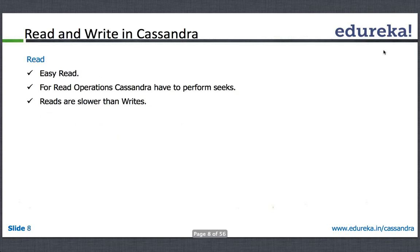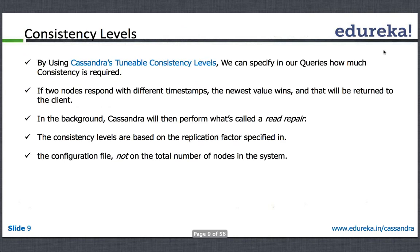Writes in Cassandra are always atomic, but it does not support ACID transactions. Reads are also very easy — Cassandra looks into SS tables and mem tables to derive data. Advanced strategies for tuning reads include key cache and row cache. Without caching, reads are normally slower than writes. But if you enable the caching layer, your reads and writes become equally performant.